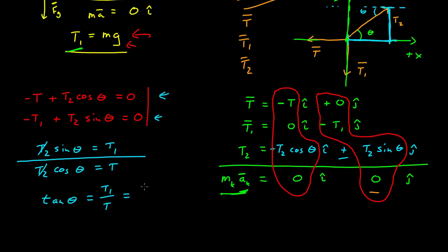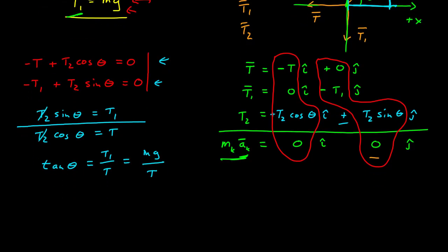At t1, I found from before, which is mg and then t. And t is equal to 12. Mass is equal to 4. So this is equal to g over 3. Tangent theta is equal to g over 3. And if I plug in g, so I'll put this in the calculator, I get an angle of 73 degrees.